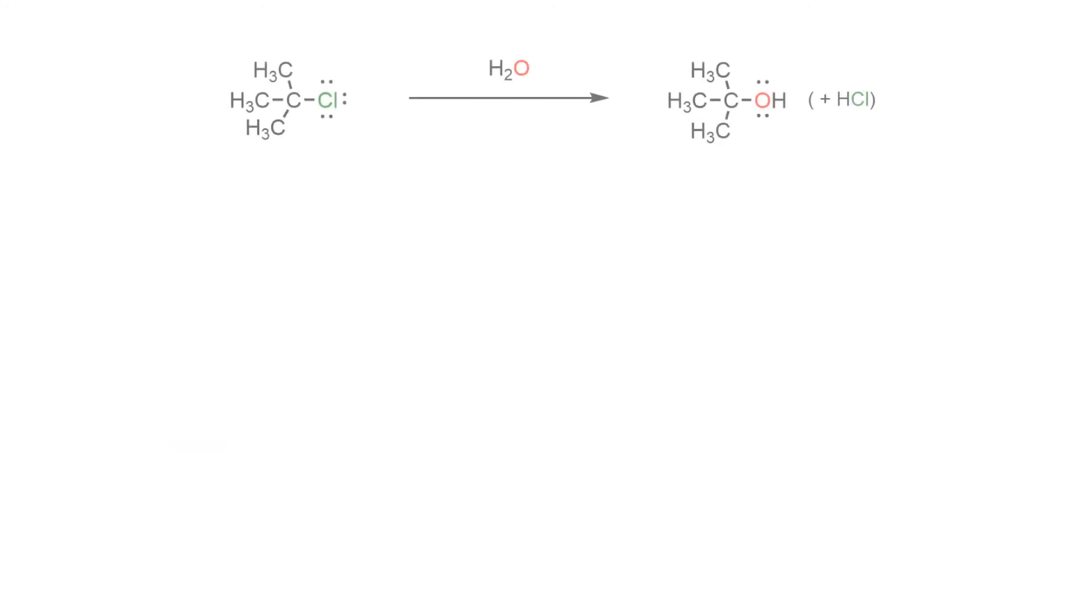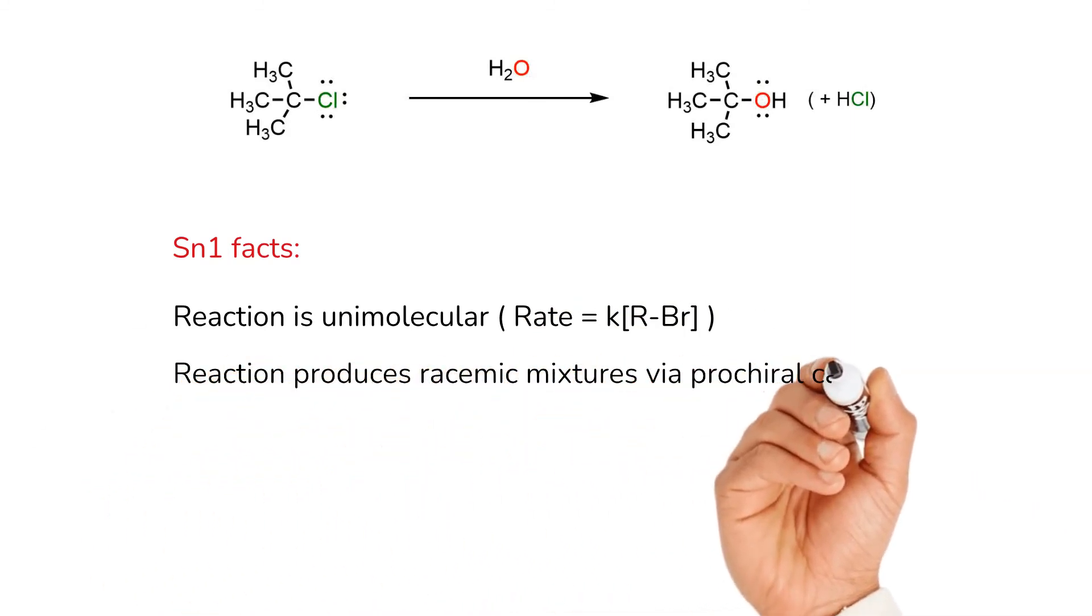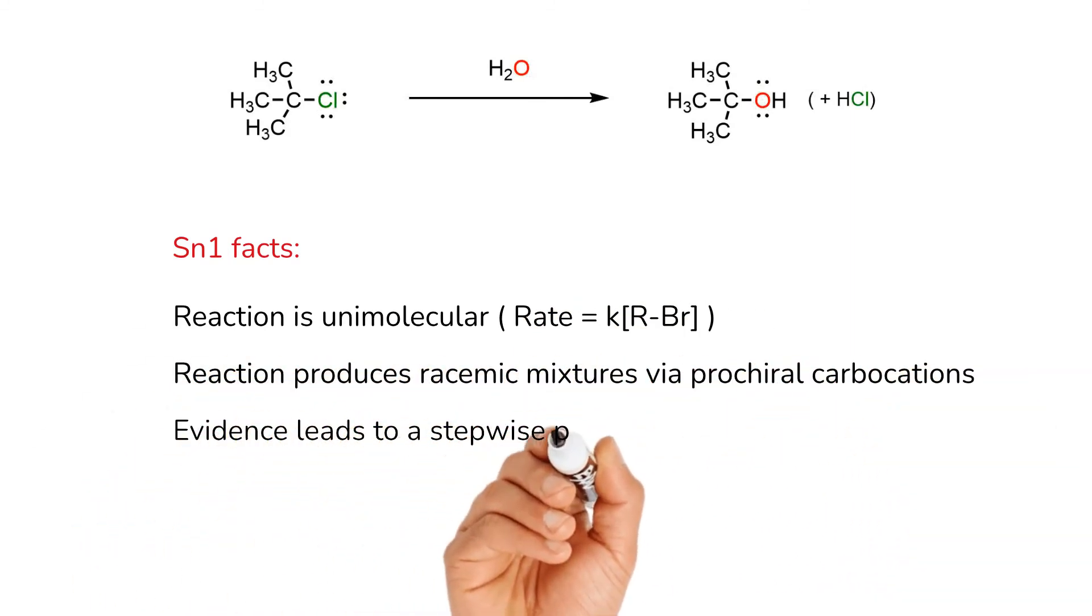In summary, a solvolysis reaction occurs when a secondary or tertiary alkyl halide is treated with a polar protic solvent such as water. The solvent promotes loss of the leaving group to form the carbocation in the rate-determining step, then behaves as a nucleophile to give the alcohol substitution product.